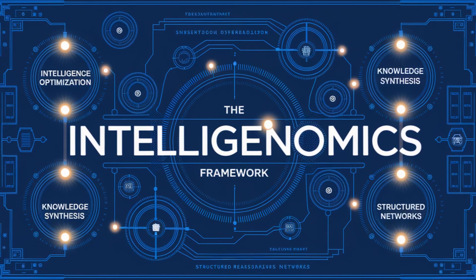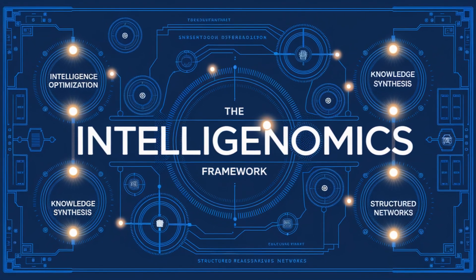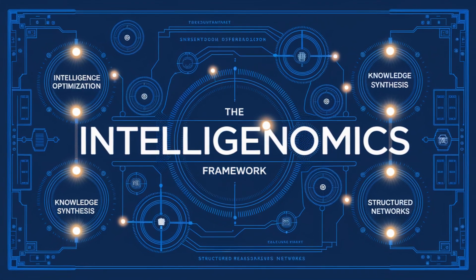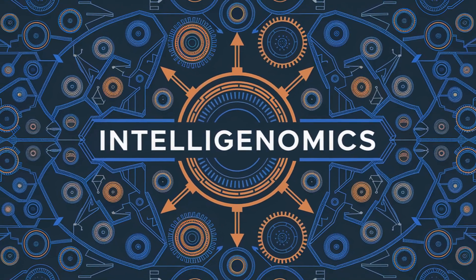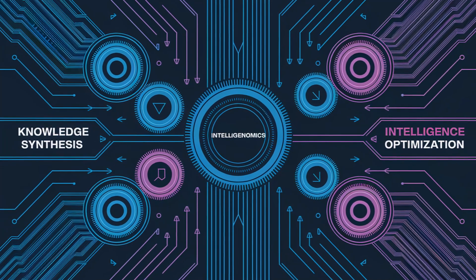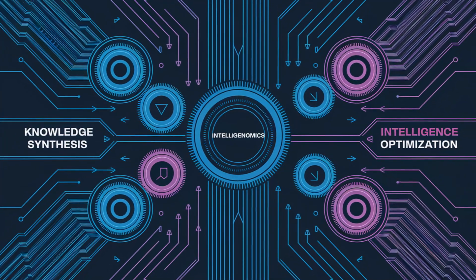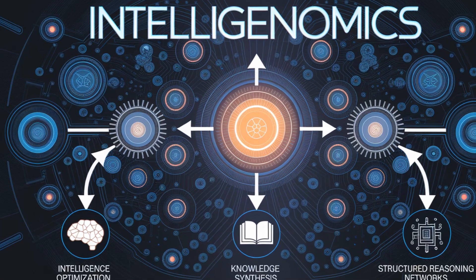Let's delve deeper into how these technologies work together within the framework of intelligenomics. Picture AI as the brain of the operation. It excels at recognizing patterns, making predictions, and learning from data. This is where AI's prowess in machine learning and deep learning comes into play.